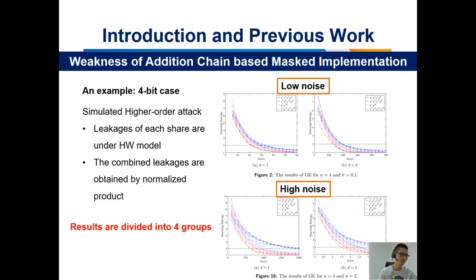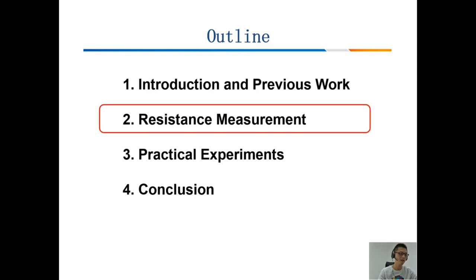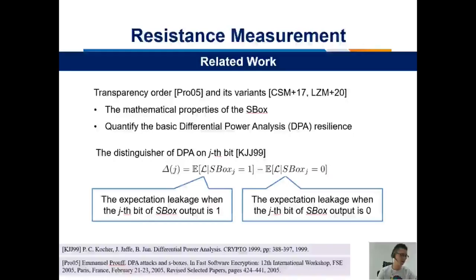Here is an example for the 4-bit case. It is a simulated experiment of a higher-order CPA attack. The simulated leakages of each share are under the Hamming weight model. The combined leakages are obtained by the monomialized product. It can be seen that the results can be divided into 4 groups. Next, we introduce our resistance measurement, which can help explain these results.